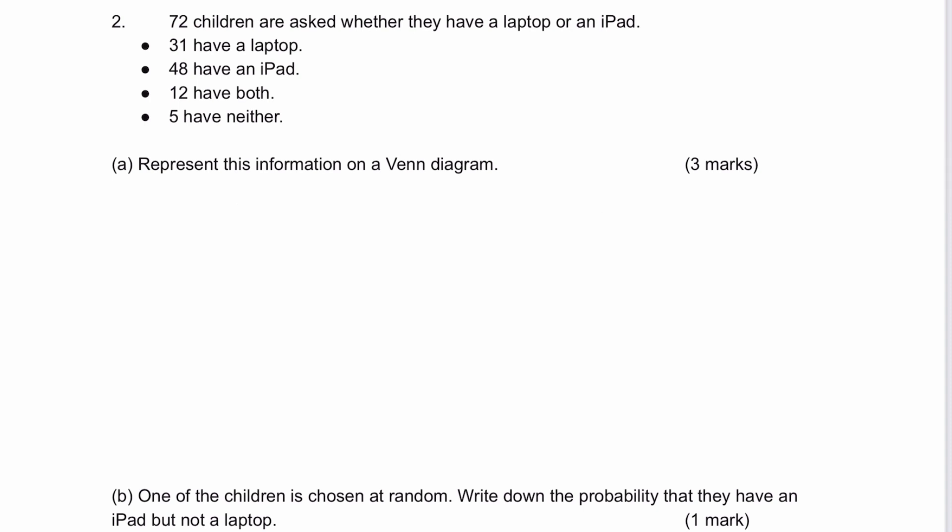Question number two: 72 children are asked whether they have a laptop or an iPad, and then we get the responses. It says represent this information in a Venn diagram. So let's have a look at how a Venn diagram works.